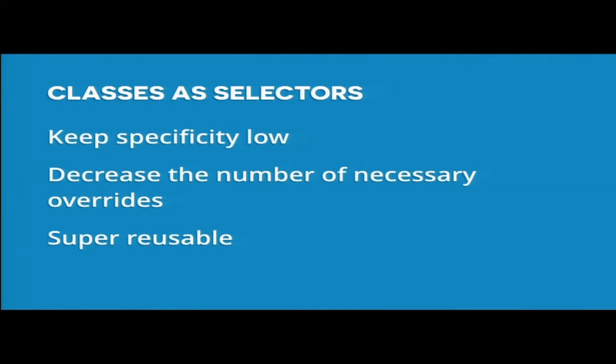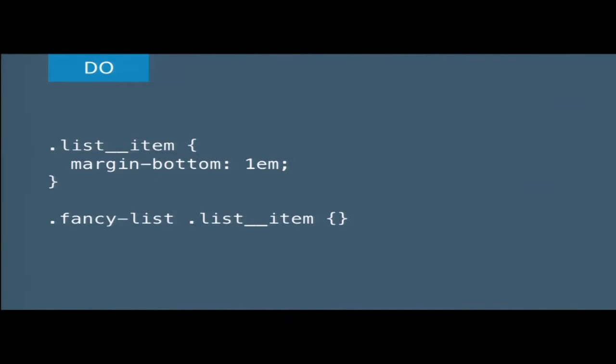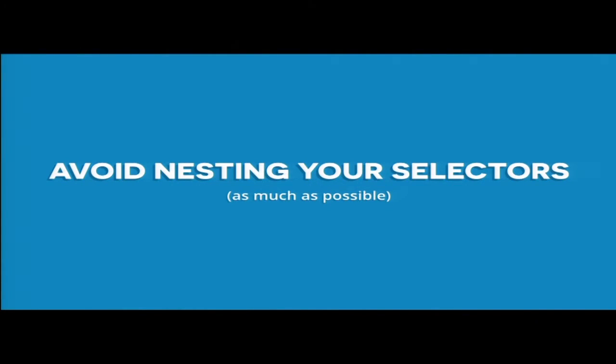Using only classes keeps specificity low, decreases overrides if you're doing a really good BEM class naming system, and it's reusable. A bare minimum example: if you styled a list item with a bottom margin, to override it you'd have to use a class on the list item. If you have another component called 'fancy-list' that extends it a little bit, you still have to also override it. So do something more additive — use another class to add the margin-bottom.